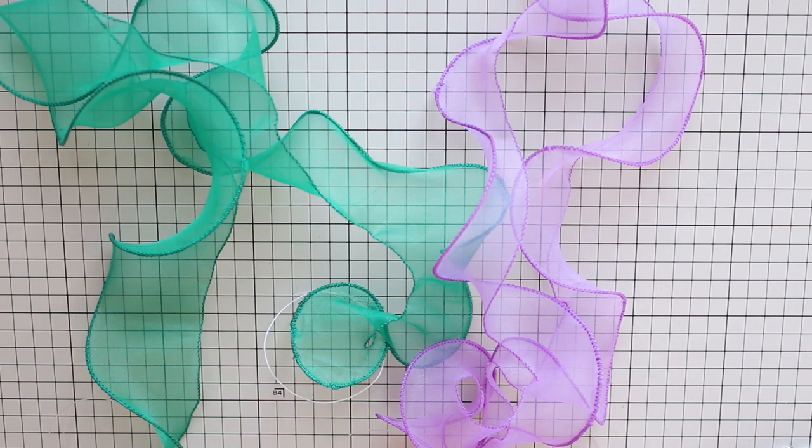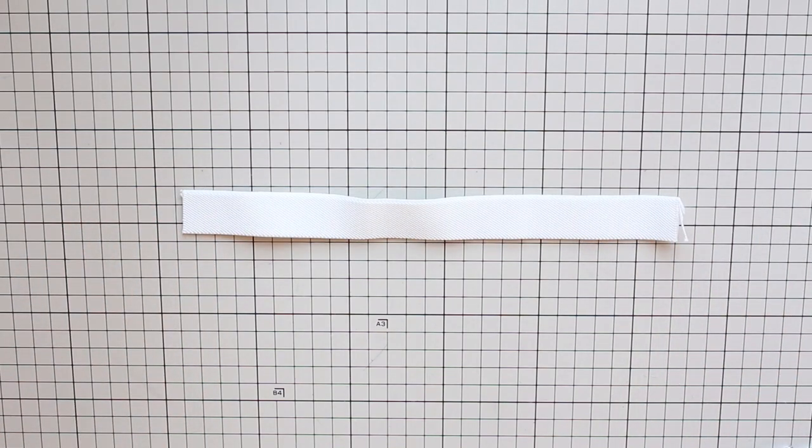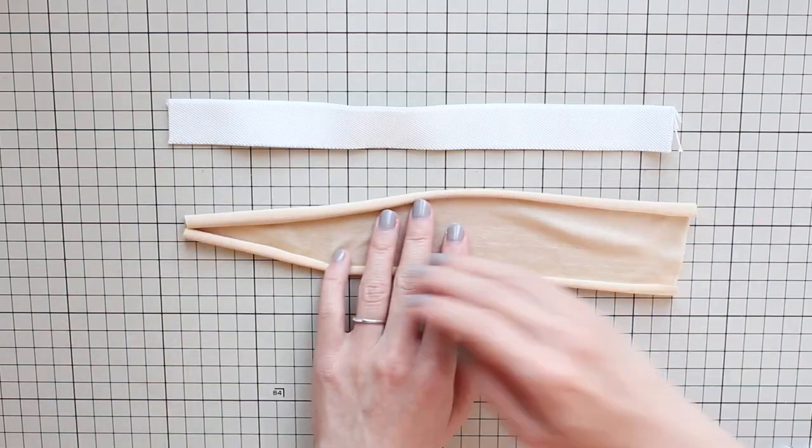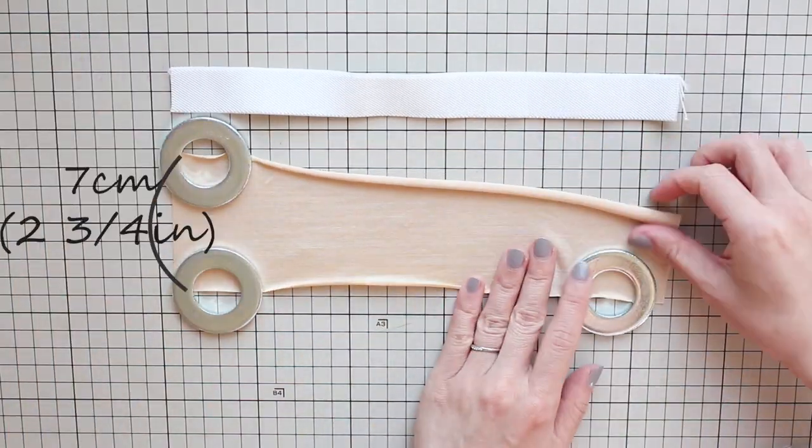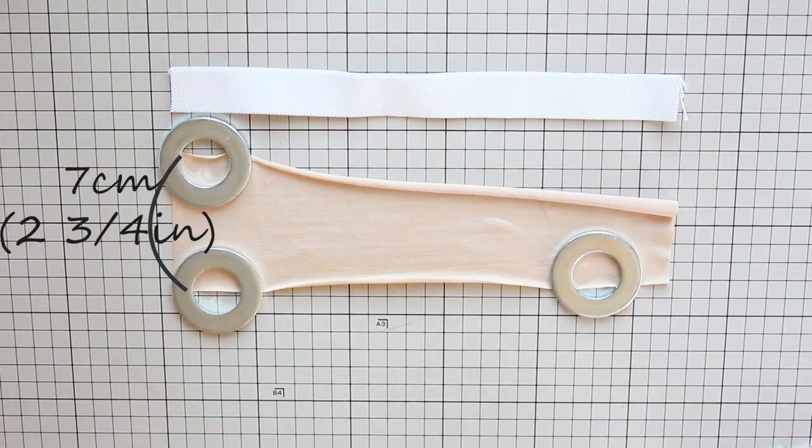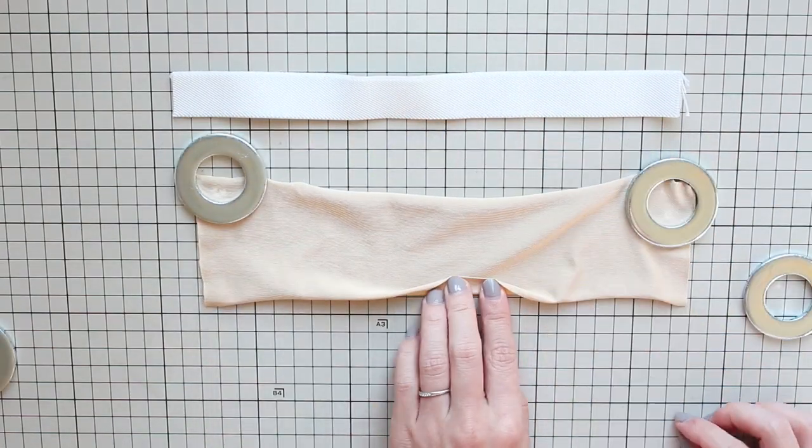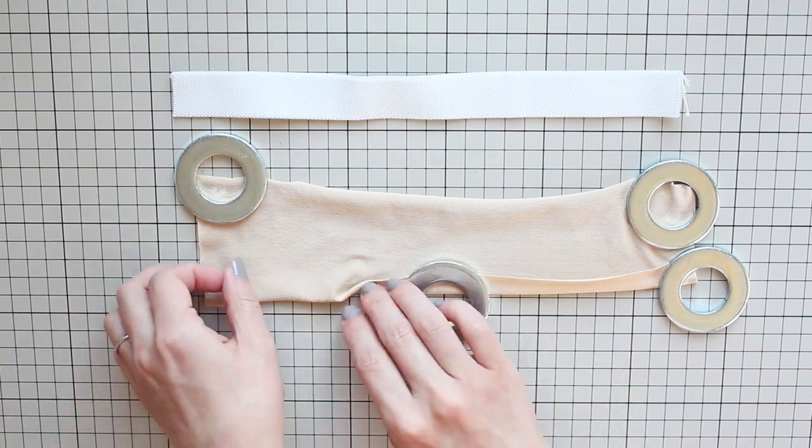Now let's make the armband. First wrap the elastic around your upper arm and make it snug and tight. Give it extra two centimeters or three quarter inch and cut. Then take your stretch fabric and cut it to a strip that's the same length as the elastic and seven centimeters or two and three quarter inches wide. Fold one centimeter or three eighths of an inch from the bottom edge towards the wrong side and bring your strips.